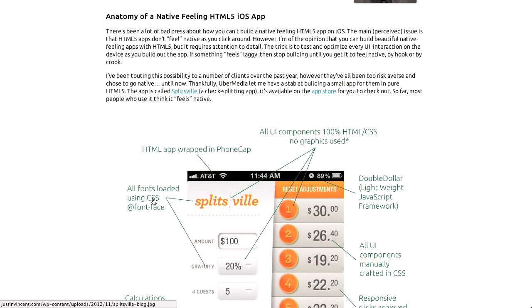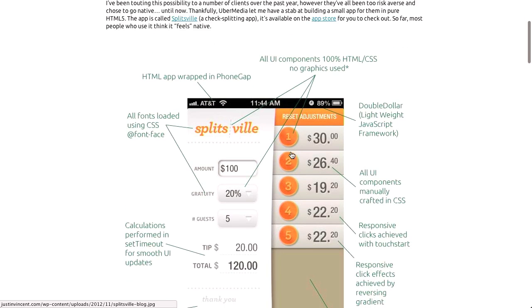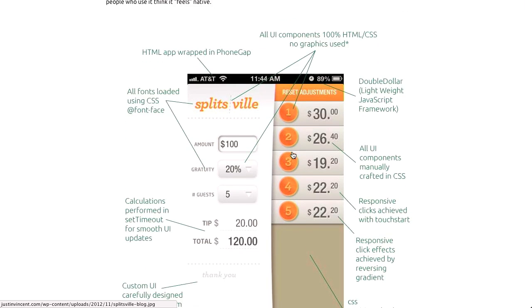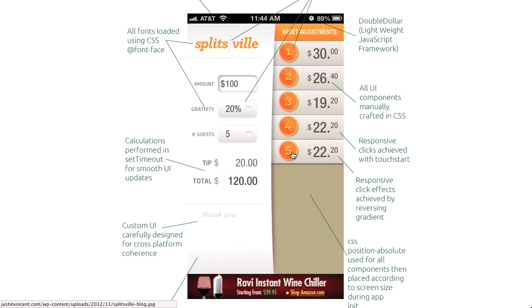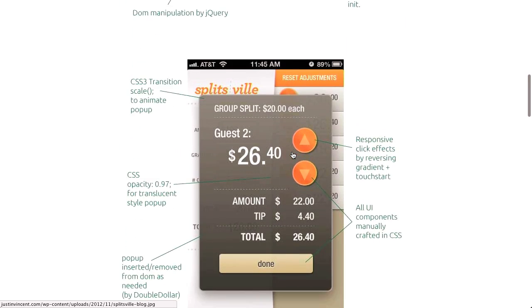For instance, wrapping the HTML in PhoneGap to get rid of the browser Chrome, as well as some of the frameworks you use and some of the techniques like using font-face for some nice fonts, CSS3 calculations and animations, and a lot of other cool techniques. It goes through some of the screens and points out the techniques that were used to make it feel really native, look really good, and be very responsive. Kind of some things that you may not remember when trying to build an HTML5 app for an iOS device.